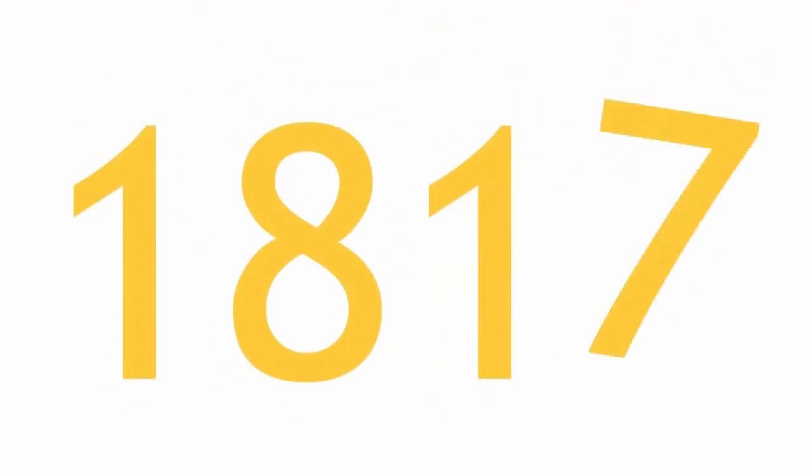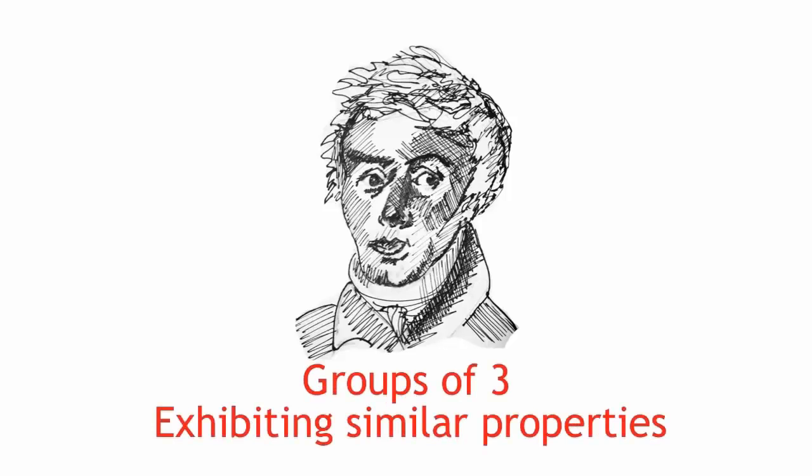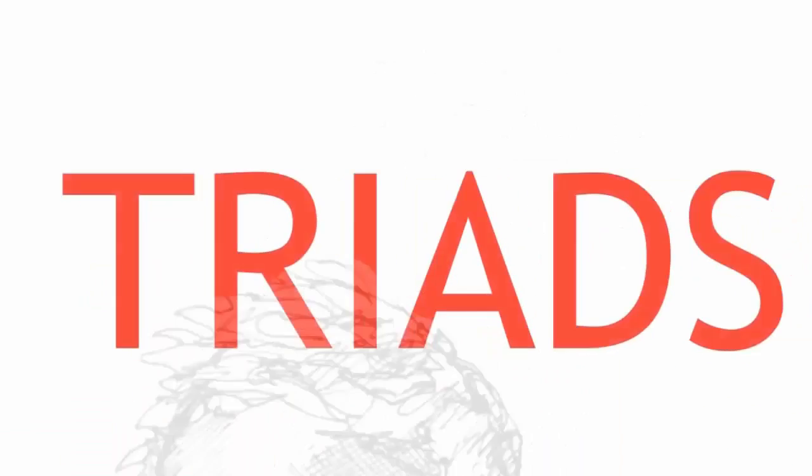In 1817, one of the first patterns amongst the known elements was observed. Johann Wolfgang Dobereiner noticed he could form groups of three with elements exhibiting similar properties. He termed these groups triads.